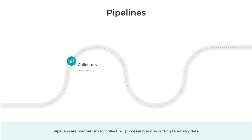An analogy I like to use in explaining this is the water treatment system. Starting with collectors, which are the water sources in this analogy. Just as in water treatment systems — rivers, lakes or reservoirs — where raw water is collected before undergoing treatment, in open telemetry the pipeline begins by collecting raw telemetry data from various parts of the system.